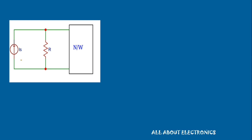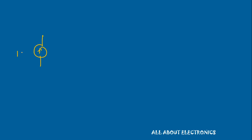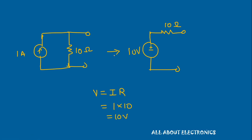Likewise, a current source Is with a resistance R in parallel in any network can be transformed into a voltage source Vs with the same resistor R in series, where Vs = Is·R. For example, a 1A current source with a 10Ω resistor in parallel can be transformed into a voltage source with the same 10Ω resistor in series. The value of this voltage source V = I·R = 1 × 10 = 10V.